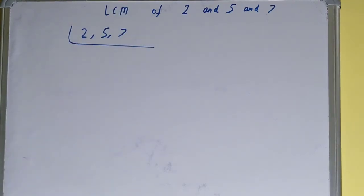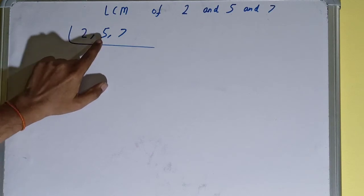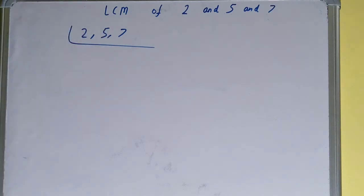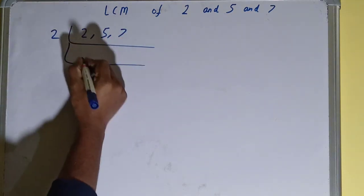The next thing you need to do is start with the lowest prime number, which is 2. Check if any of the numbers is divisible. This one is divisible and these are not. If any one of the numbers is divisible, we'll divide it.